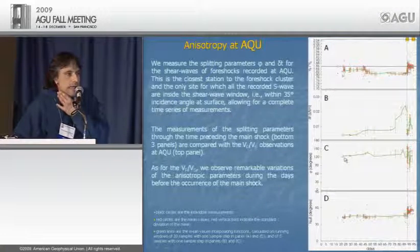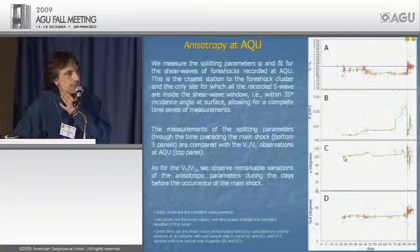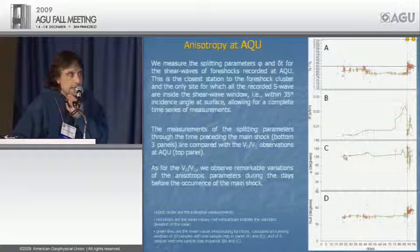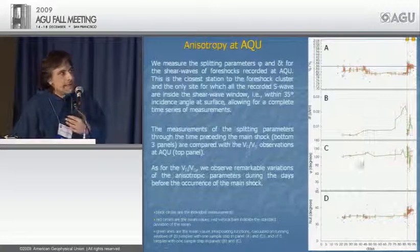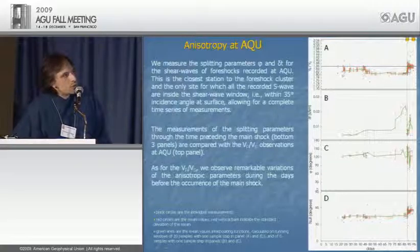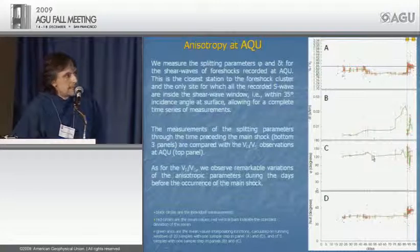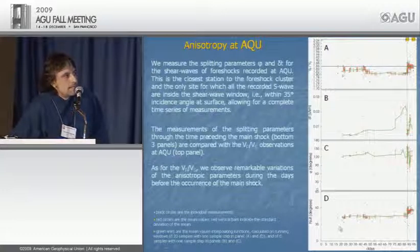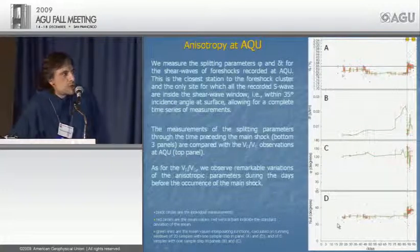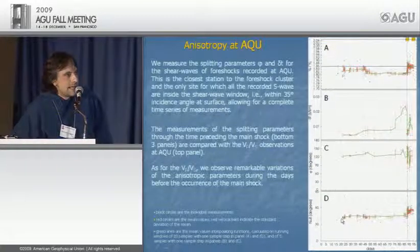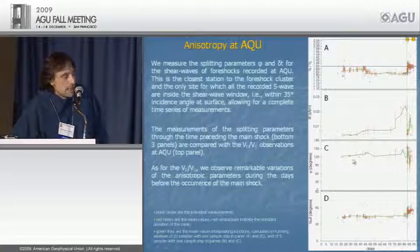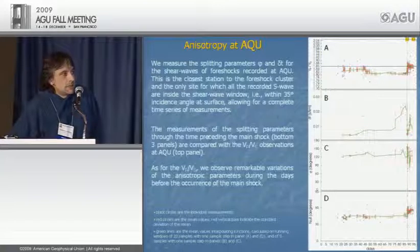We reconcile these observations in one physical model. Until March 13, rocks in the hanging wall undergo progressive opening of cracks and fractures in a classical dilatancy scheme; simultaneously, rocks in the footwall are fluid-filled and fluids are confined within the footwall by a sealed fault, with sealing created by repeated episodes of slip along the same fault structure.